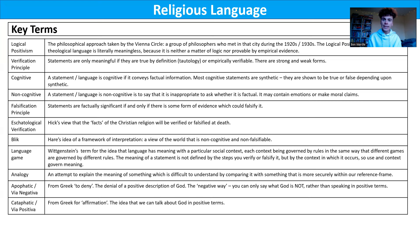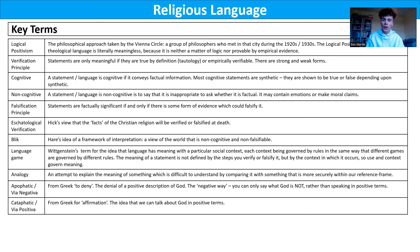The verification principle is the idea that statements are only meaningful if they are true by definition — a tautology, for example, that all triangles have three sides or all bachelors are men — or empirically verifiable. Empirically verifiable means you can test whether a statement is true or false through observation, testing, and using your senses. Empiricism is the idea that we acquire knowledge through our senses and through experience. So empirically verifiable means you could use your senses, like a scientist measuring things in a lab, to check if a statement is true or false.